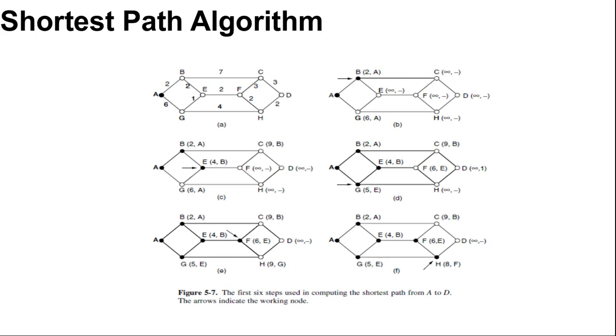This one becomes the new working node. We now start at B and examine all nodes adjacent to it. If the sum of the label on B and the distance from B to the node being considered is less than the label on that node, we have a shorter path. After all the nodes adjacent to the working node have been inspected, the entire graph is searched for the tentatively labeled node with the smallest value. This node is made permanent and becomes the working node for the next round.